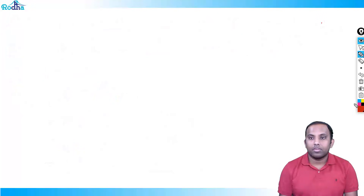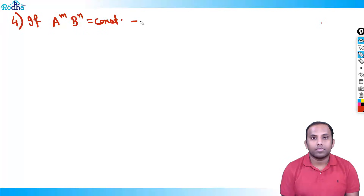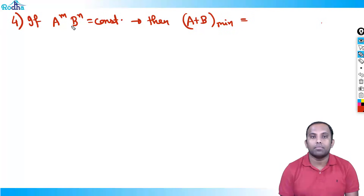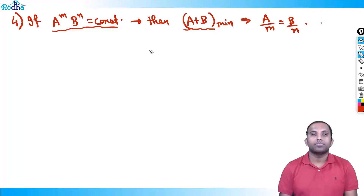The fourth rule is simply the reverse of the third: if a raised to m into b raised to n is constant, then the minimum value of a plus b occurs when a by m equals b by n. Product constant, sum minimum — always.